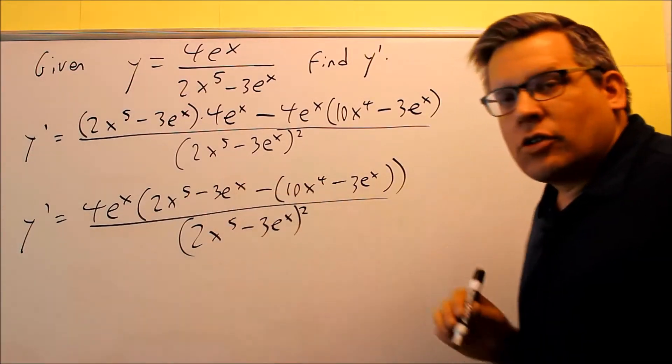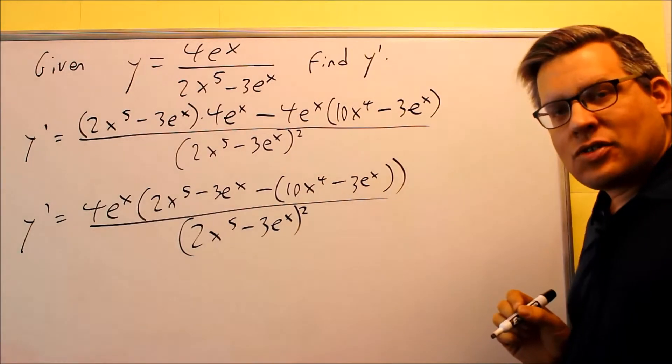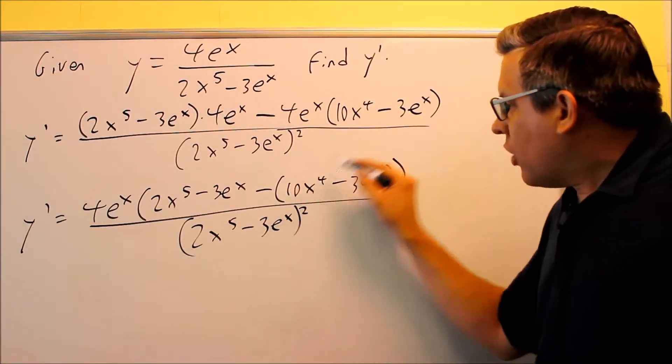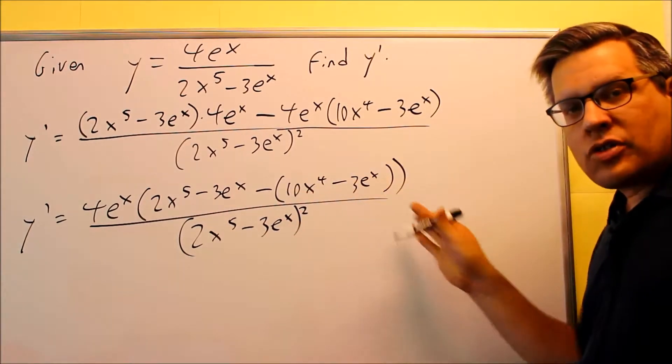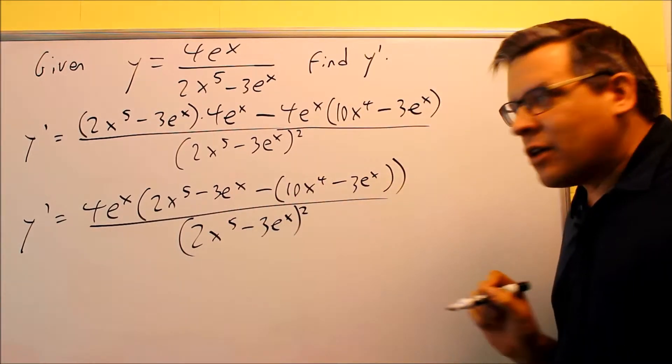Now that we have it factored, what we want to do is simplify the terms on the inside. So once you have the parentheses there, what I'm going to do, instead of rewriting this step again, I'm just going to go ahead and distribute the minus sign through the parentheses reminding me that I have to do that.